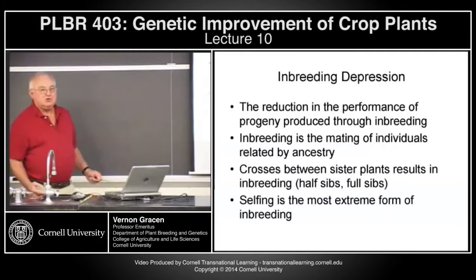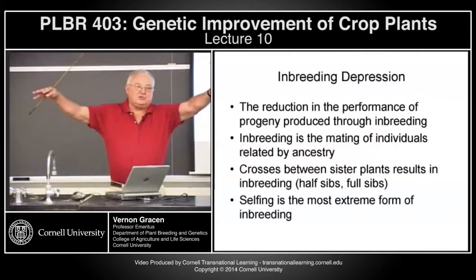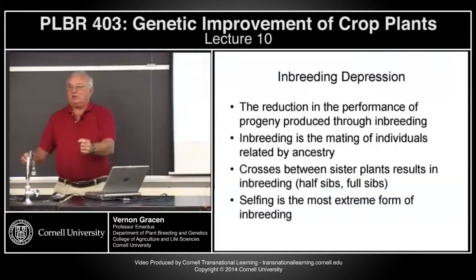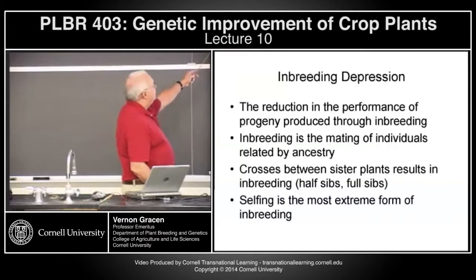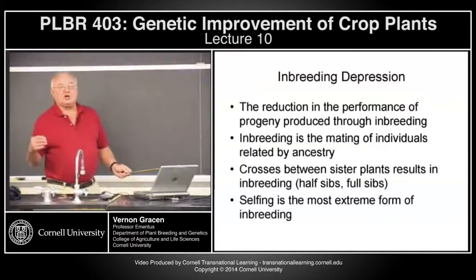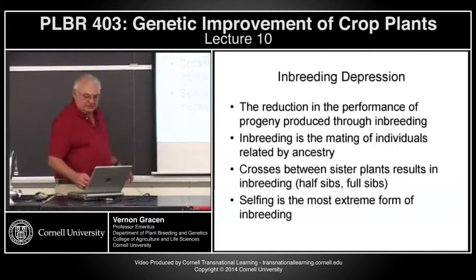To do that, we have to inbreed. The strategy is: if you start with all those heterozygous plants in that heterogeneous mixture and you self-pollinate, you can reach a state of homozygosity like we have in self-pollinated crops, and get homozygous true-breeding individuals. The problem is, when we do that, there's a reduction in performance. Inbreeding can occur either from selfing or from crosses between related plants.